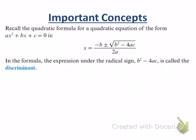In the formula, the expression under the radical sign, b² - 4ac, is called the discriminant. That's what it's called.